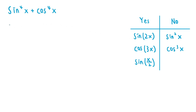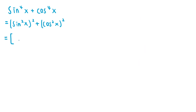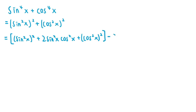The first thing to do is recognize that we can rewrite the expression as sine squared of x all squared plus cosine squared of x all squared, and complete the square. This is in the form a squared plus b squared, where a equals sine squared of x and b equals cosine squared of x. So 2ab equals 2 sine squared of x cosine squared of x, meaning we add that term to complete the square, then subtract it at the end to keep the expression the same.